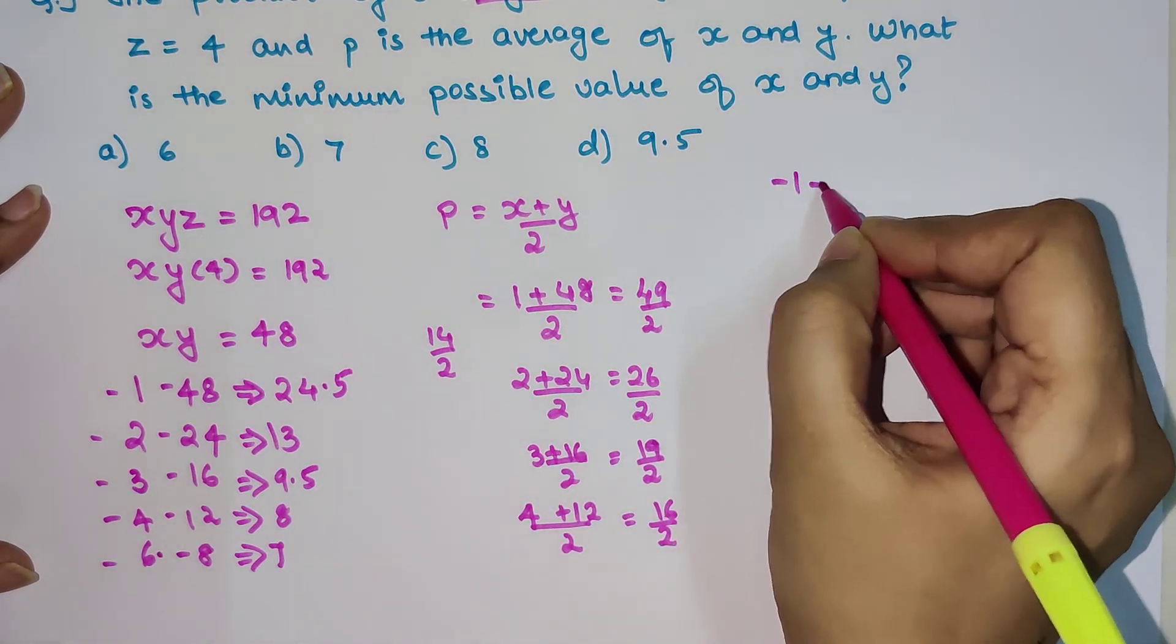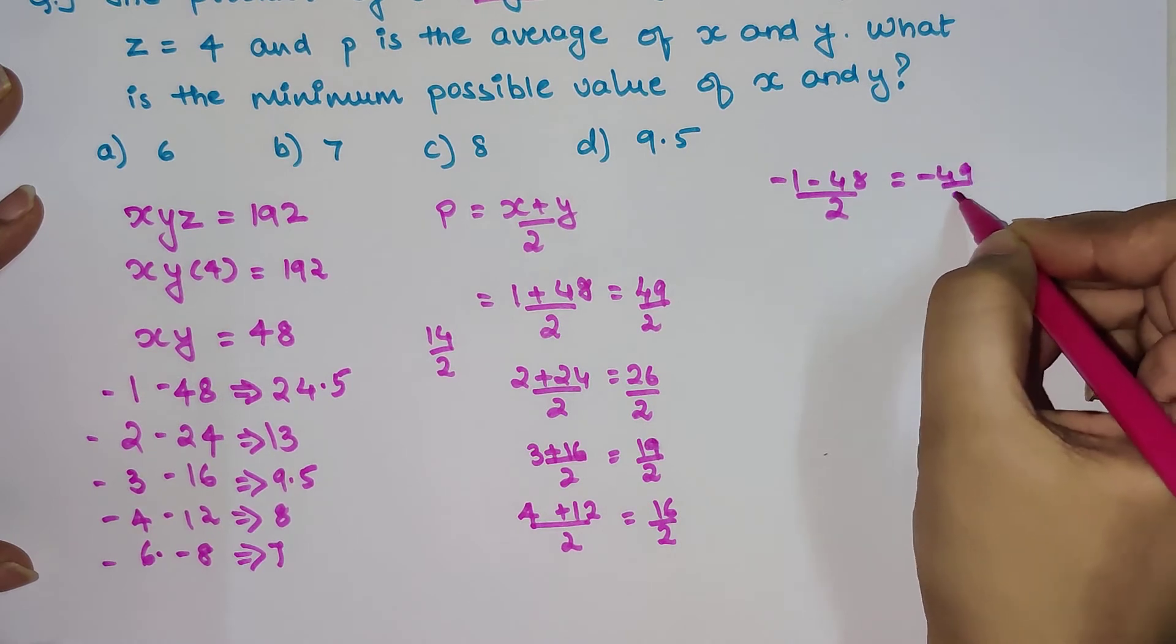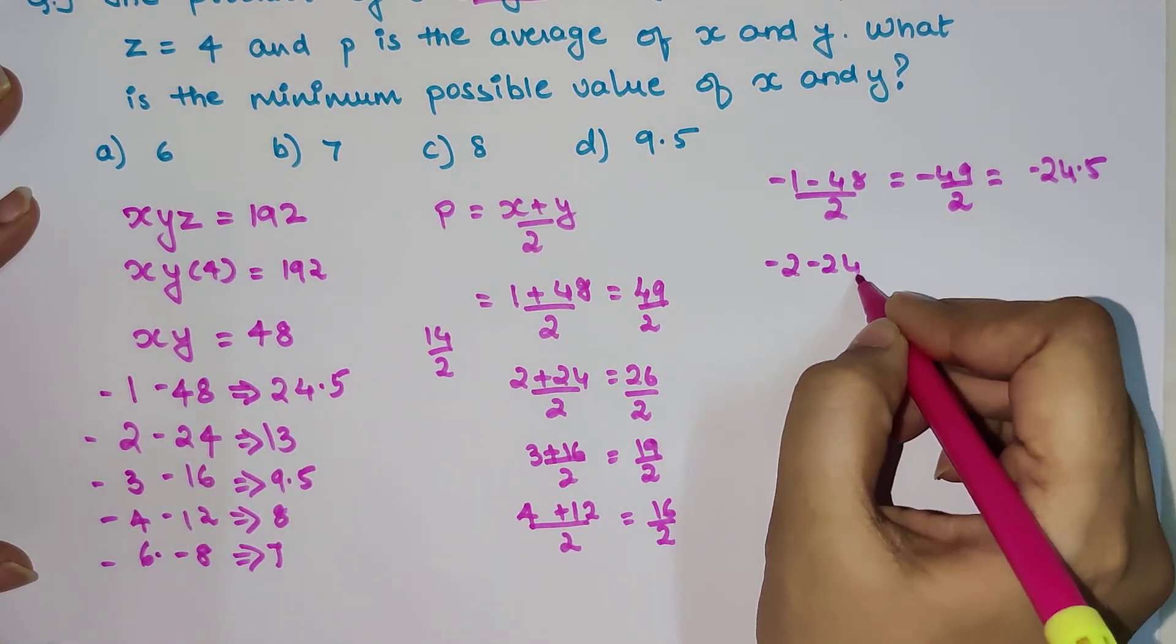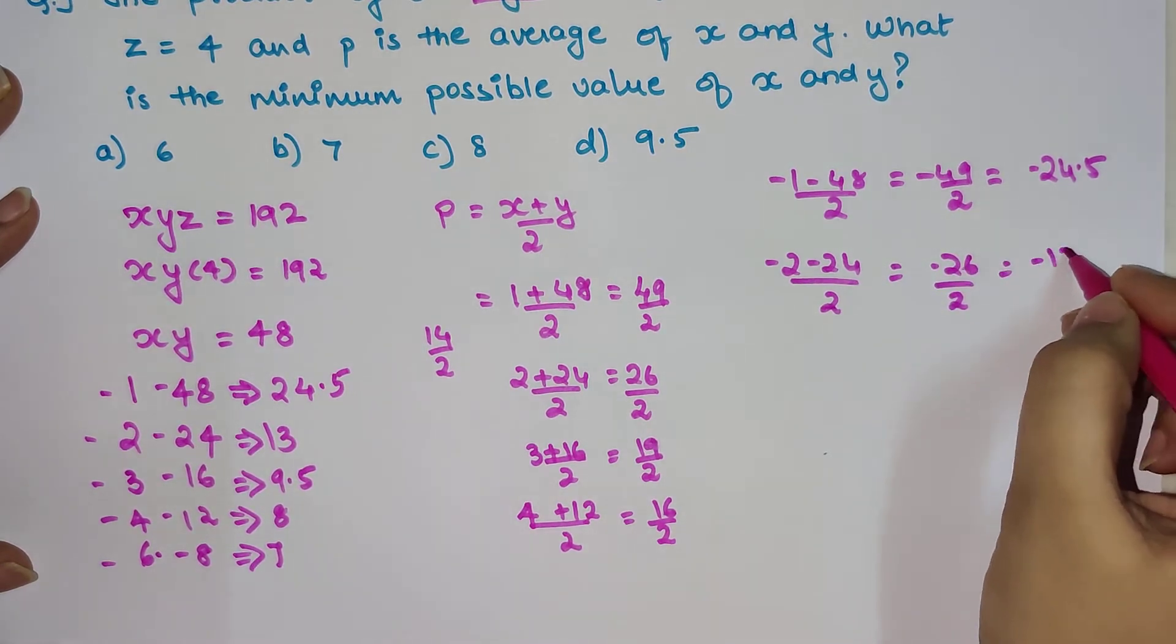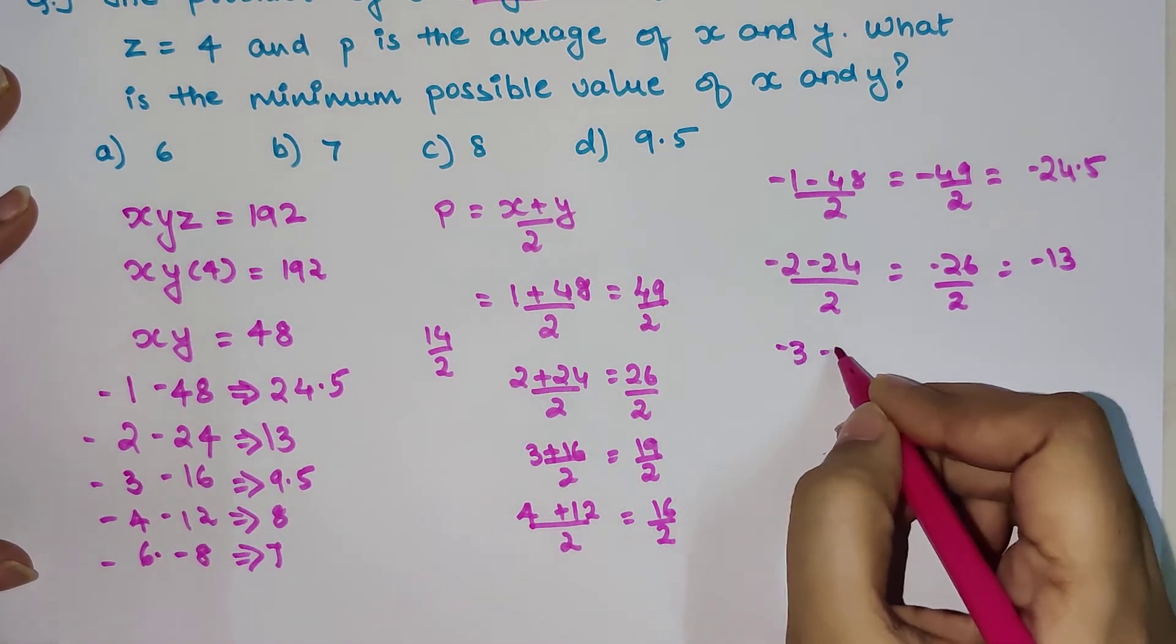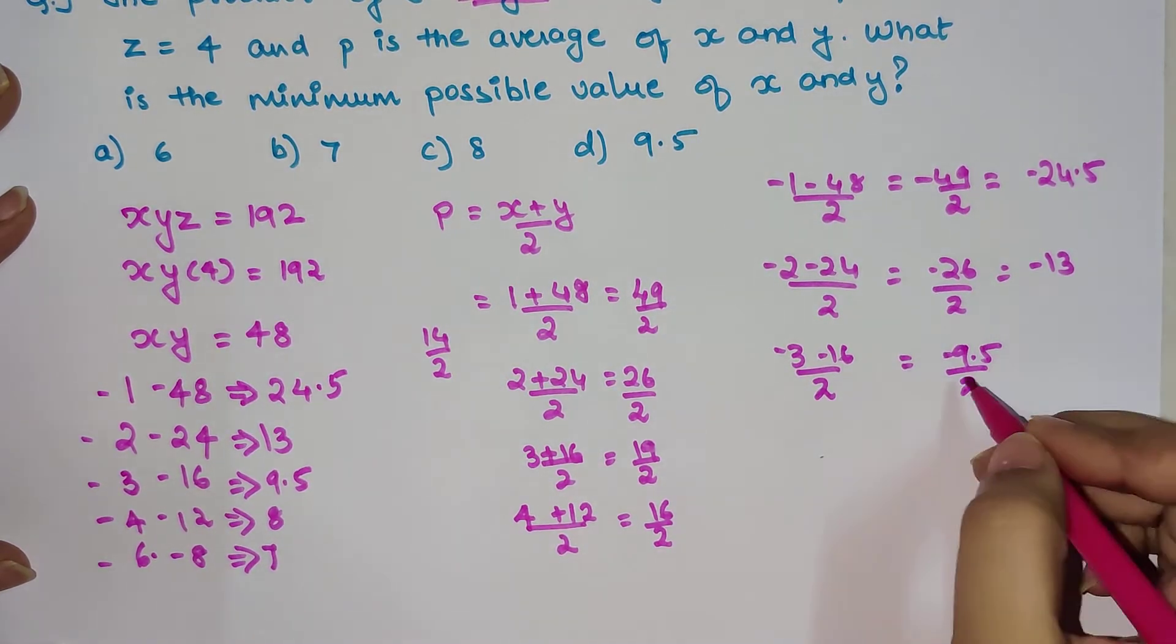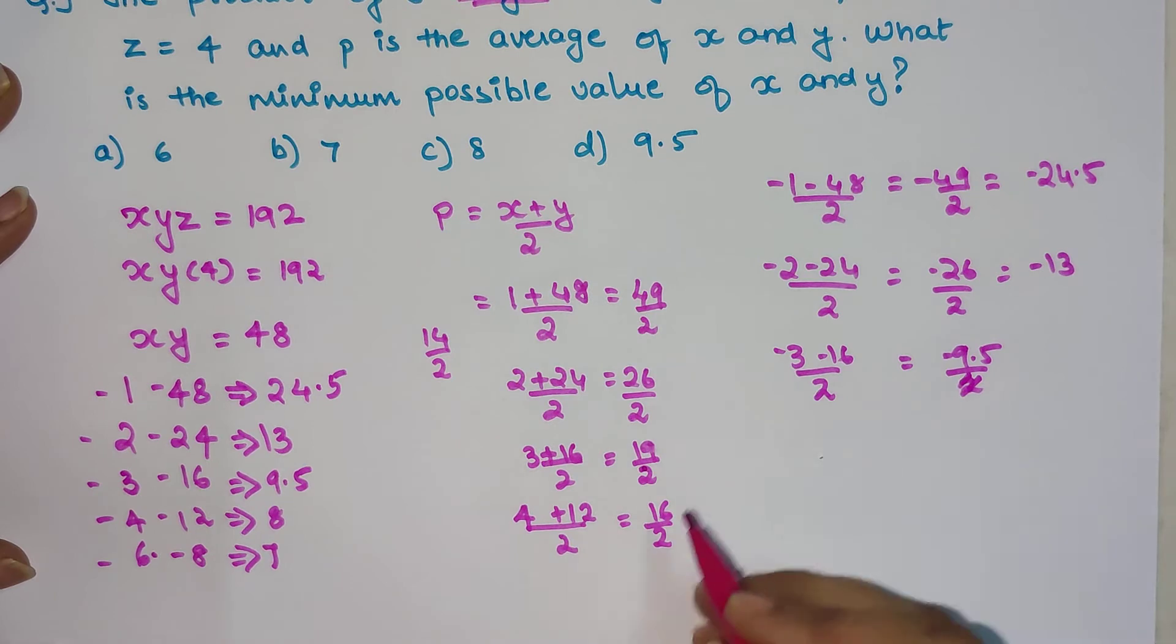Now we have minus 1 minus 48 upon 2, that gets you minus 49 upon 2, and that gets you minus 24.5. Similarly, minus 2 minus 24 upon 2 gets you minus 26 upon 2, that gets you minus 13. Similarly, minus 3 minus 16 upon 2 gets you minus 19 upon 2, that gets you minus 9.5.